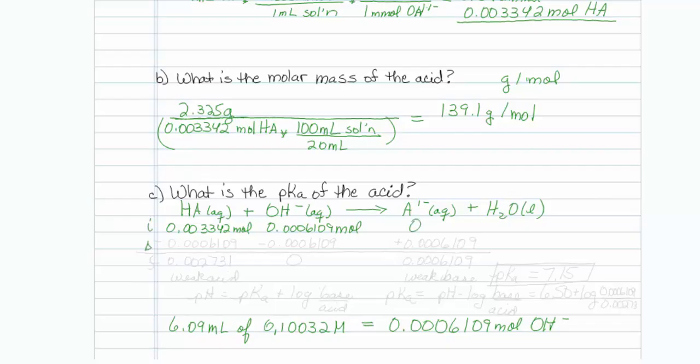Now let me do my delta. And finally, my equilibrium final row. So that is 0.0006109. And this is 0.003342 minus the other one, and I get 0.002731.